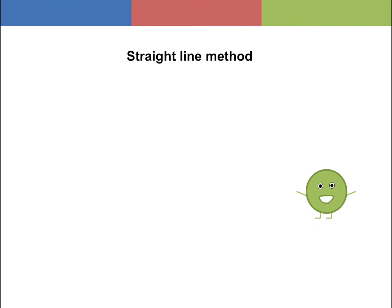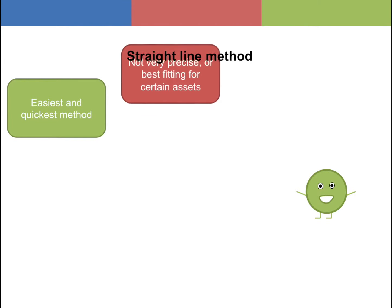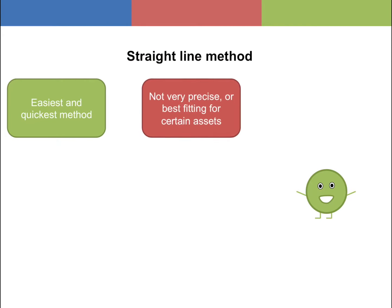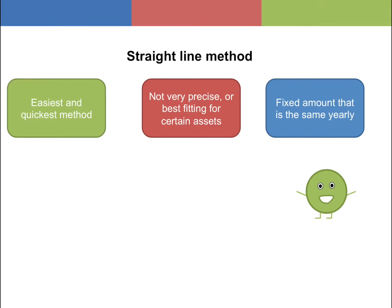The straight line is the easier and quicker of the two methods, however it may not accurately represent how much the asset should have been depreciated by. Straight line has a fixed figure for its depreciation and is the same each year. An example of an asset that may be depreciated by this method would be a building.